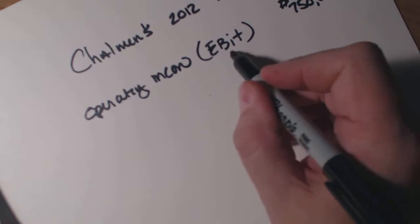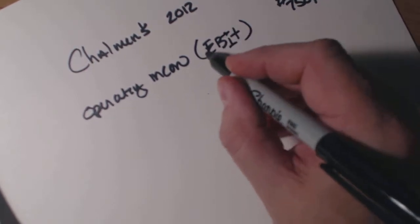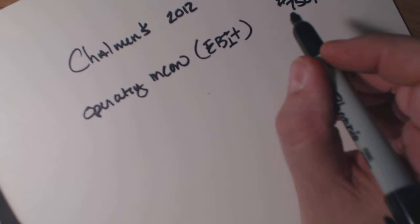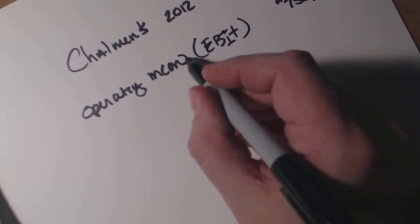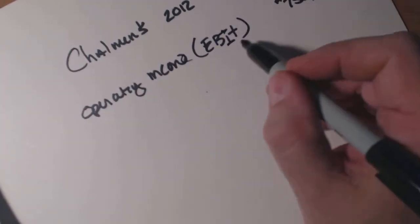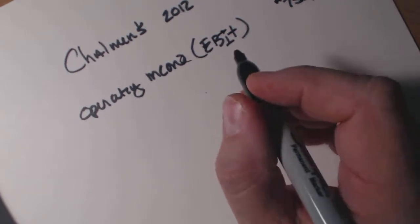Now, I wrote EBIT, that's a capital I. EBIT stands for Earnings Before Interest in Taxes. So they had $750,000 of earnings before interest in taxes.